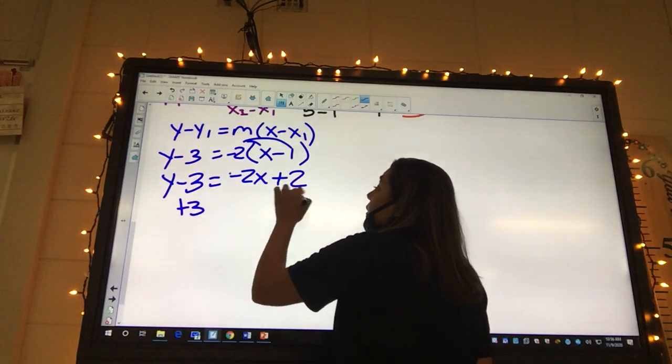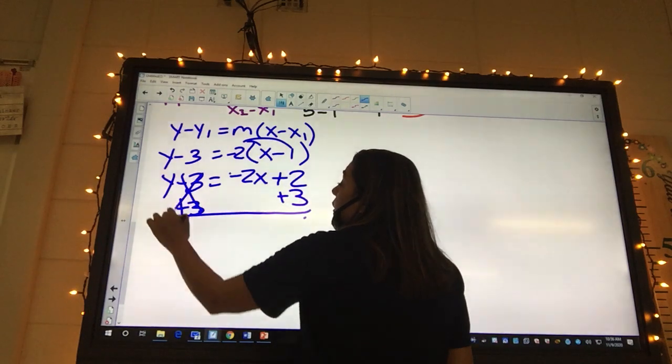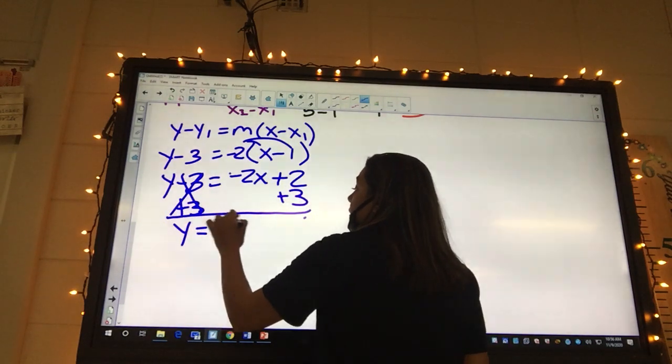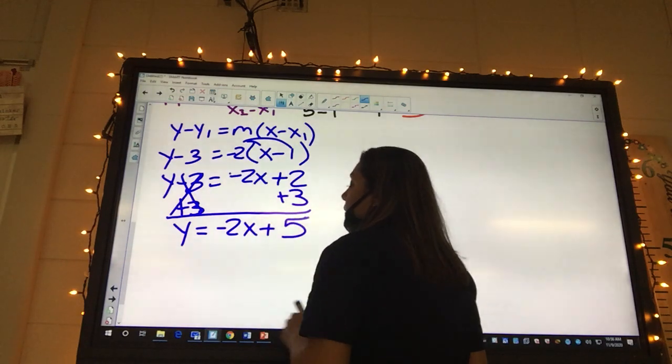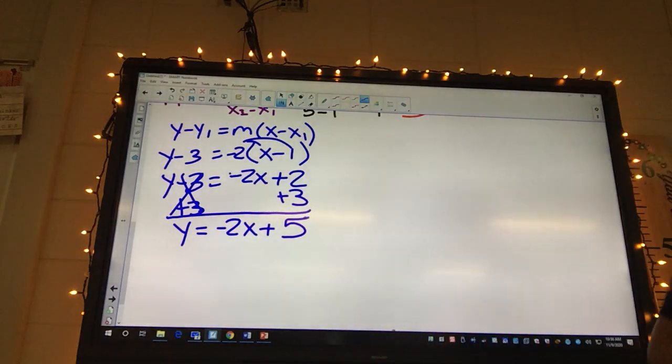And we got a plus 3 on both sides. How can you tell that's in slope intercept form? Y is by itself, so y is by itself so we know that it's right.